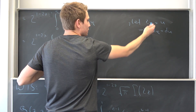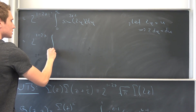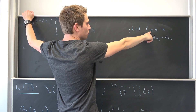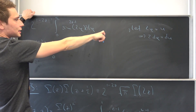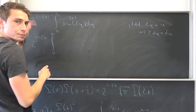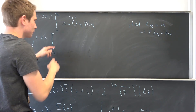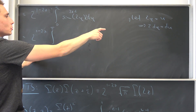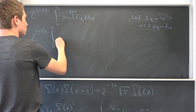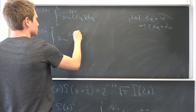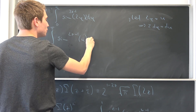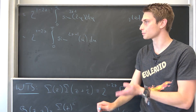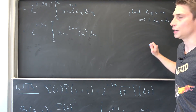If we plug 0 into the substitution this gives us 0 again; if we plug pi over 2 in, this gives us pi. So the new upper bound is pi. We are going to have the sine to the 2z minus 1 power of u du.